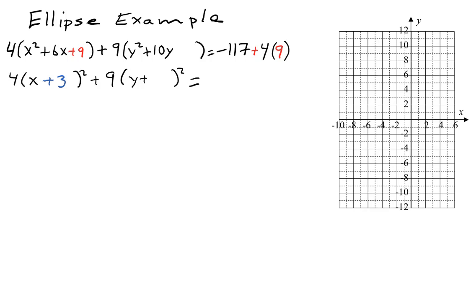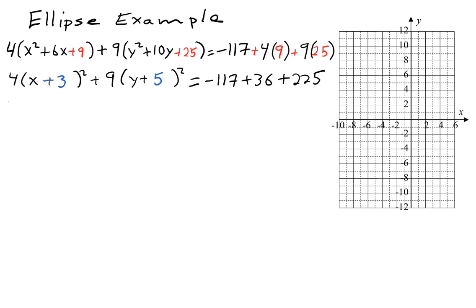We repeat this process on the y terms. The linear term is 10y with coefficient positive 10; half of that is positive 5, so we want y plus 5 quantity squared. Multiplying that out gives y squared plus 10y plus 25, so we need plus 25 on the left. On the left, our 25 is multiplied by 9, so we add 9 times 25 on the right as well. This gives 4 times x plus 3 squared plus 9 times y plus 5 squared equals negative 117 plus 36 plus 225, and those numbers combine to give 144.